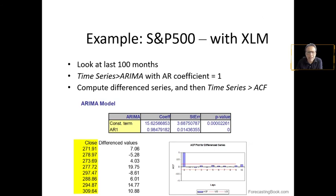Here we have an example with the Standard and Poor's. We look at the last 100 months with an R coefficient very close to one. So we compute the differenced series and then the time series ACF, which we already covered during the previous lecture.